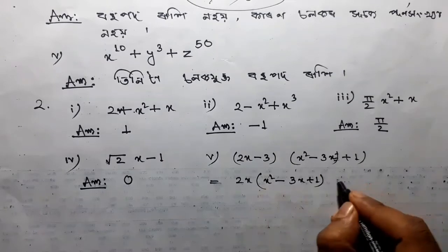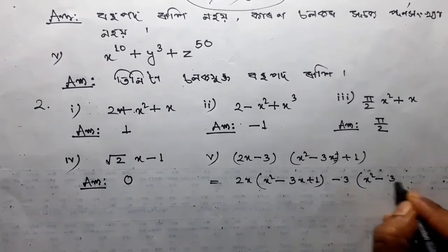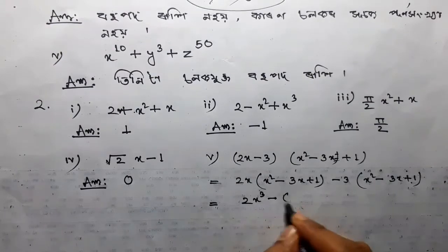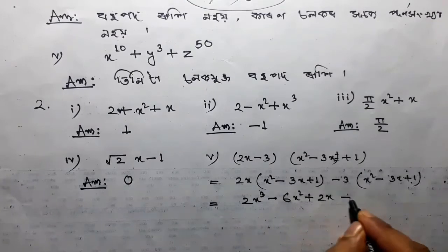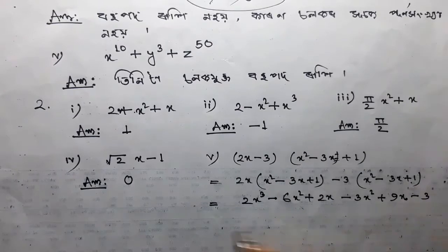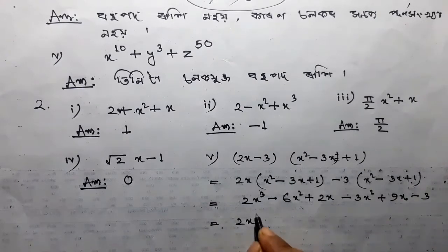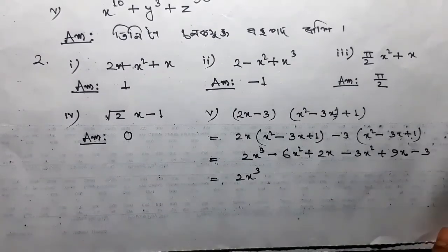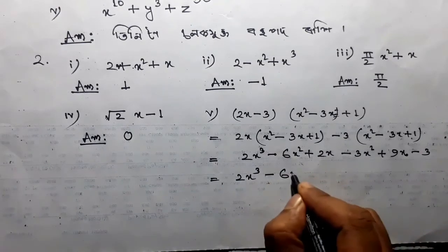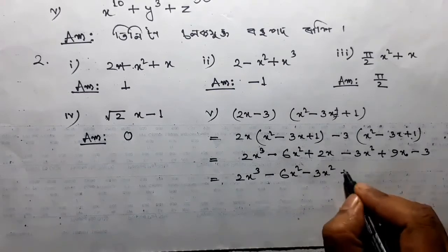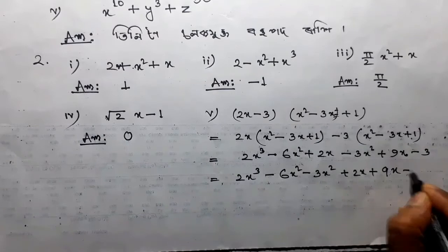It is 0. x squared plus 3x plus 1. It will write 2x squared minus 6x squared plus x squared minus 6x squared, plus 9x minus 3. 2x cube minus 6x squared minus 3x squared plus 2x plus 9x minus 3.